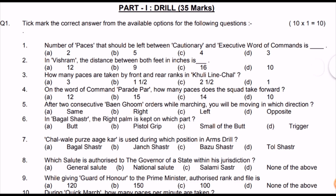Question one: name the pace — steps that should be left between cautionary and executive. The pace means steps left between cautionary and executive are four steps. This command is given on the left foot, and four steps remain until the execution of the command. Question two: in Vishram, the distance between both feet in inches is 12 inches.